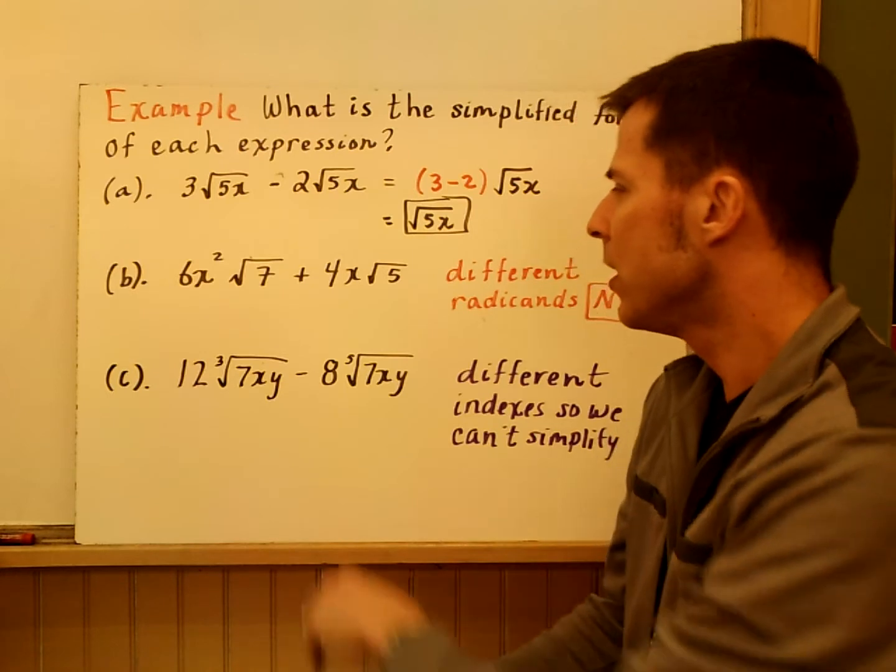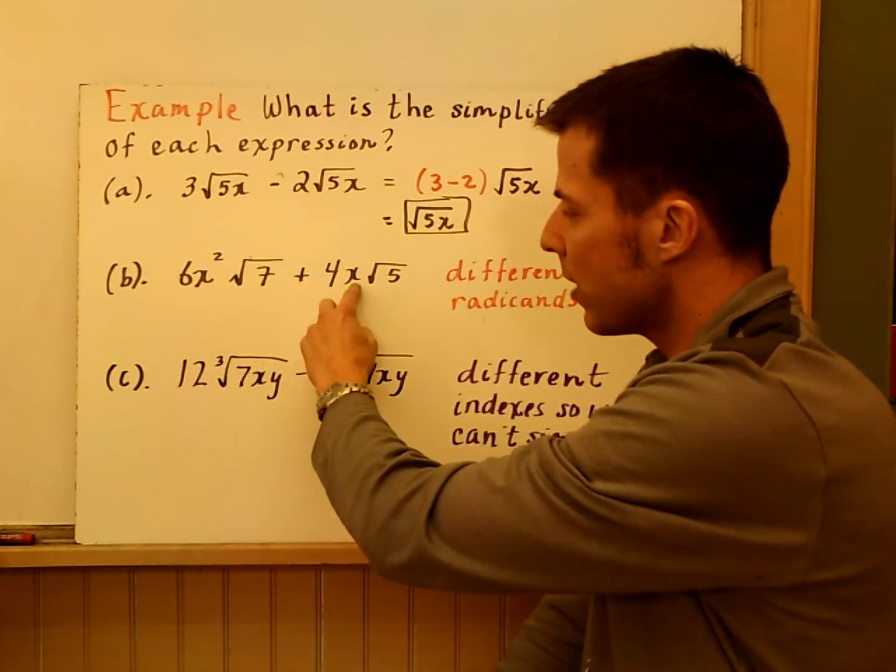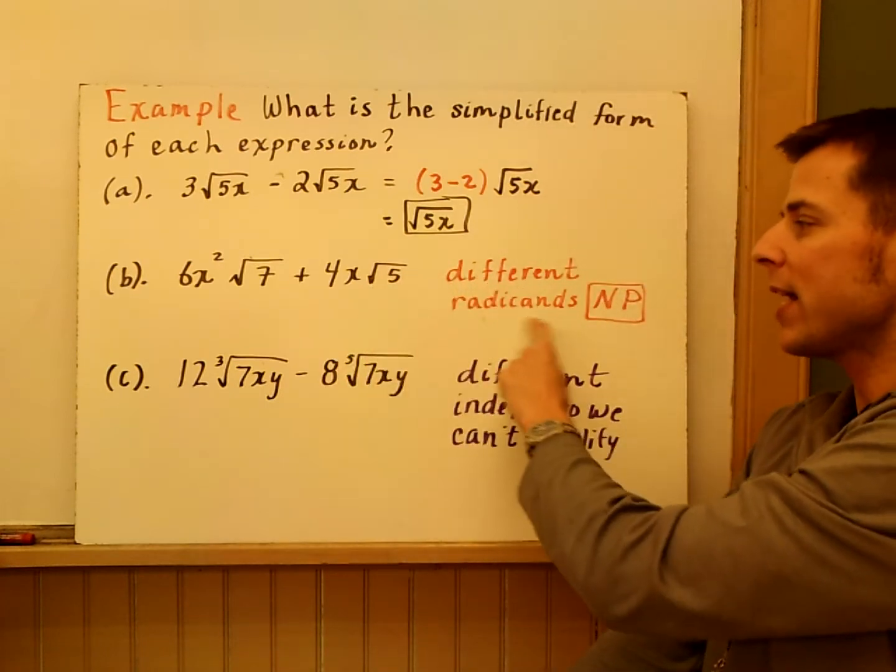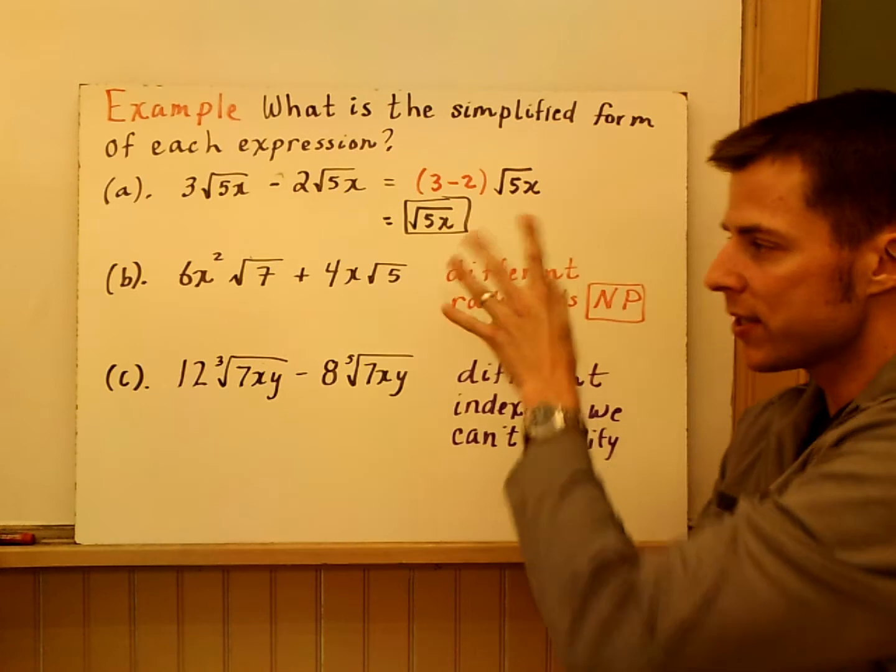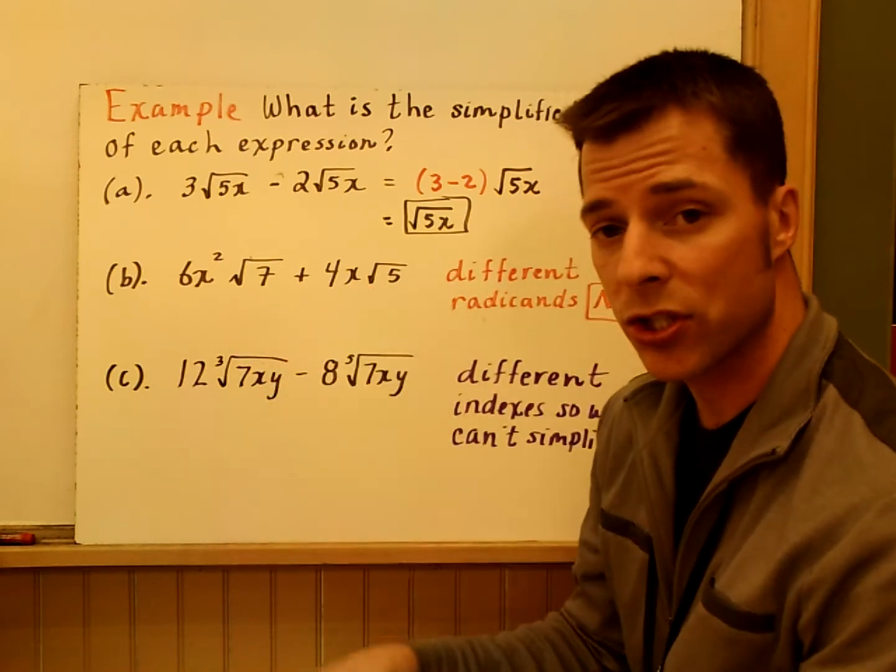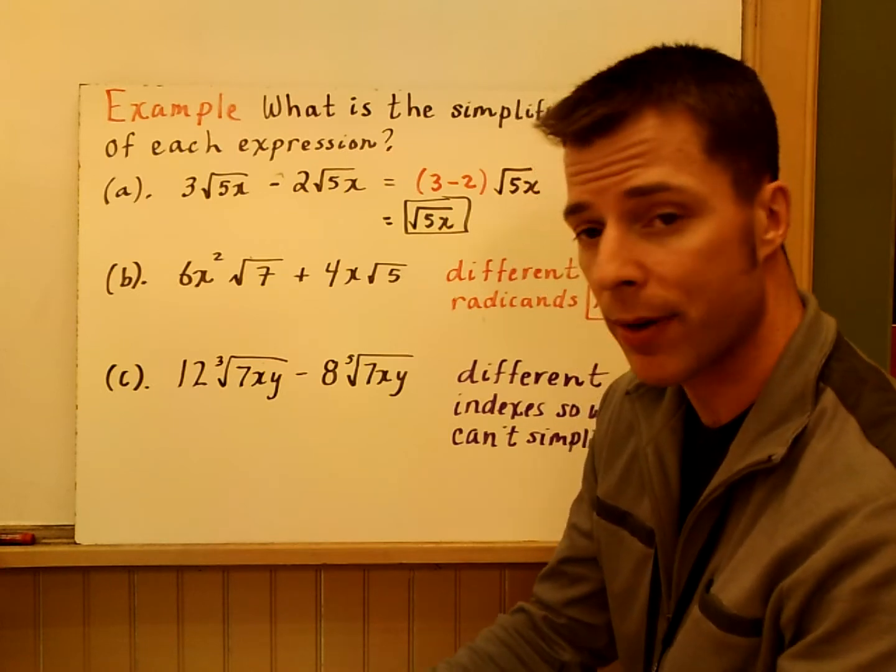The second example here, 6x squared times root 7 plus 4x times root 5. You can't combine them. They're different radicands. This is not possible even though they're both square roots. The radicands are different. You can't combine them using the distributive property there. That's not possible.